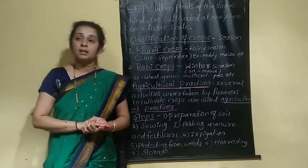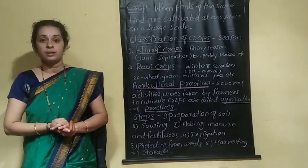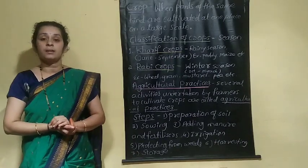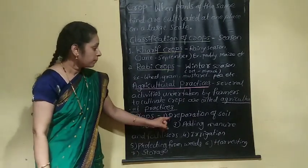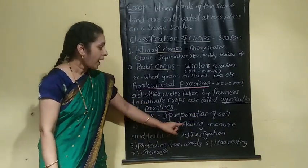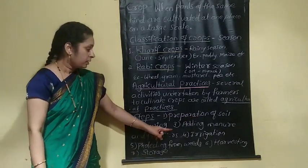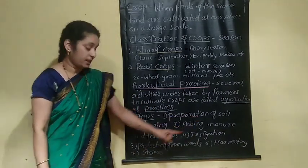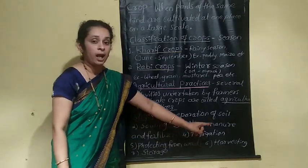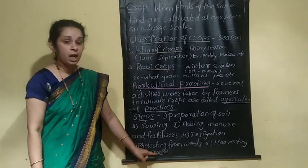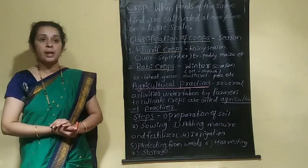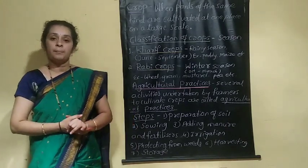Agricultural practice involves mainly seven steps: first, preparation of soil; second, sowing; third, adding manure and fertilizers; fourth, irrigation; fifth, protecting from weeds; sixth, harvesting; and seventh, storage. All these are the steps involved in agricultural practice.